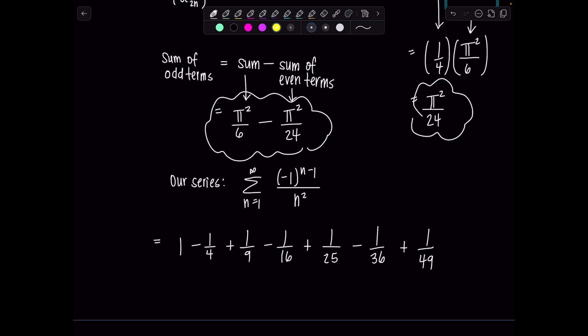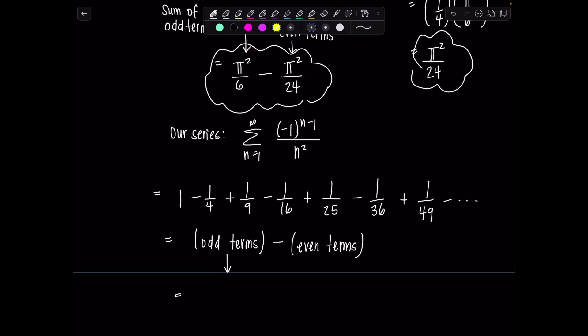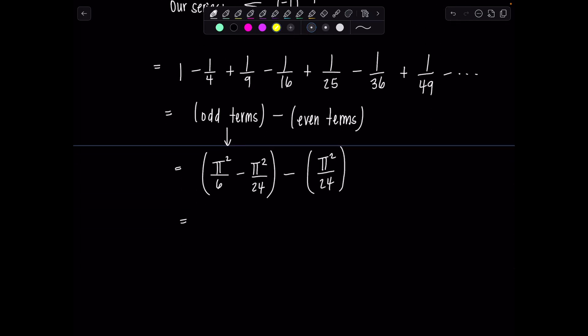What do you notice is going on? If I compare with the terms from the p series, we basically have all of the odd terms as positive and then all of the even terms as negative. So we have the odd terms from p series minus all of the even terms. And we just said the sum of the odd terms was pi squared over 6 minus pi squared over 24, and then the sum of the even terms is pi squared over 24. So then we can simplify further. This is pi squared over 6 minus 2 pi squared over 24, which is pi squared over 12. And finally, at long last, the sum of our series is pi squared over 12. Voila. Let's box that with pride.